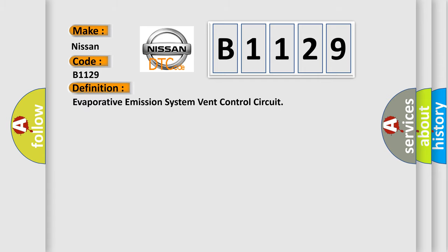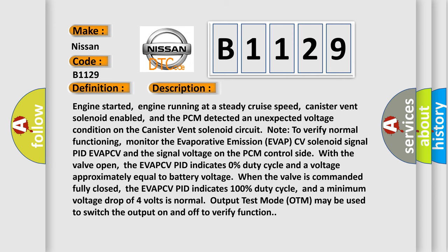The basic definition is: Evaporative Emission System Vent Control Circuit. The engine started, engine running at a steady cruise speed, canister vent solenoid enabled, and the PCM detected an unexpected voltage condition on the canister vent solenoid circuit. To verify normal functioning, monitor the evaporative emission EVAP CV solenoid signal PID EVA-PCV and the signal voltage on the PCM control side with the valve open.